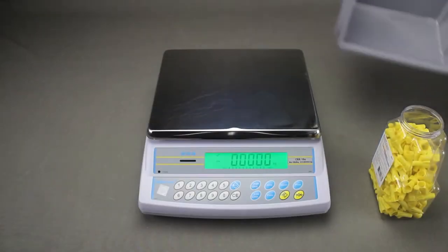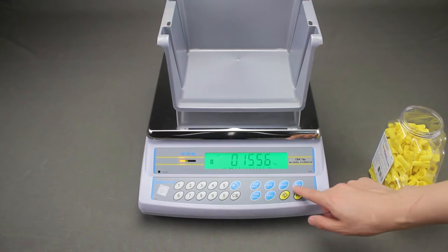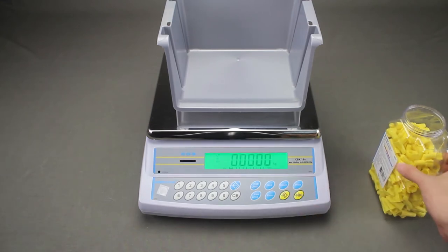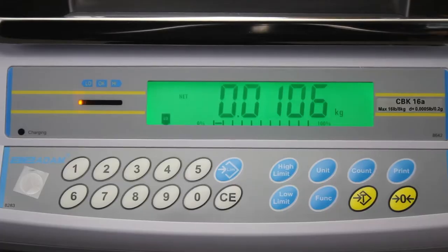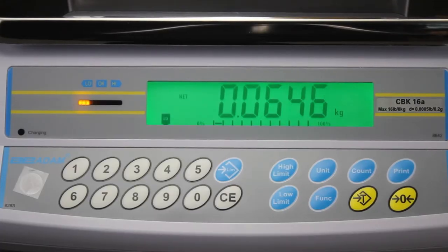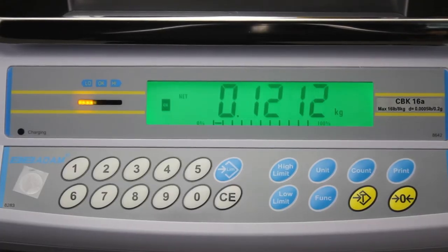Check weighing applications are straightforward, as colored indicators show the operator if a sample is under, over or within the preset limits. Quickly accomplish repetitive weighing tasks using the CBK's Graphic Capacity Tracker.